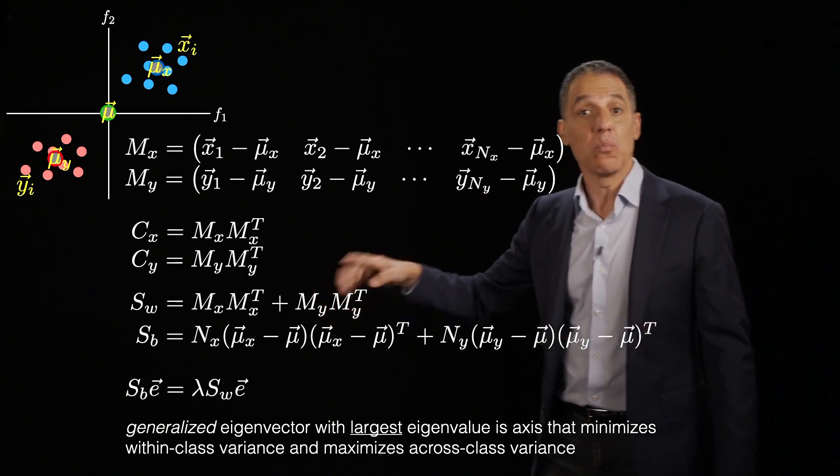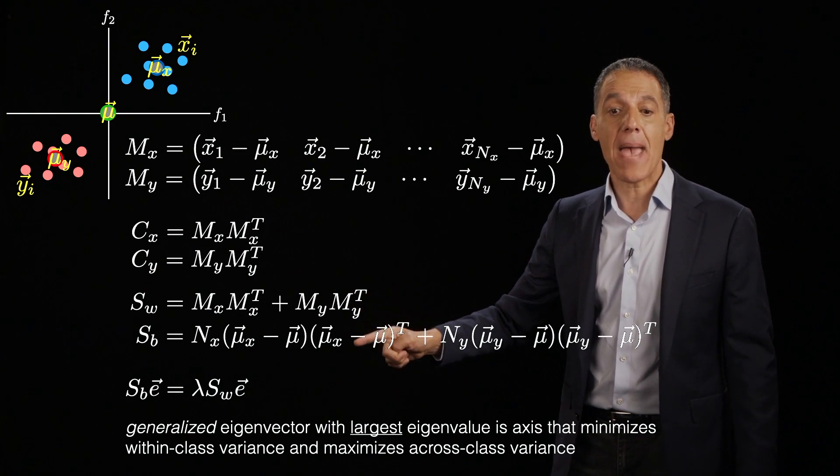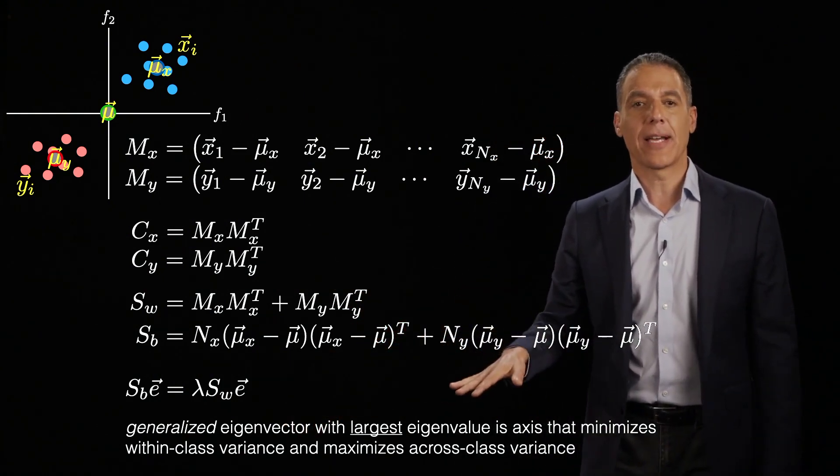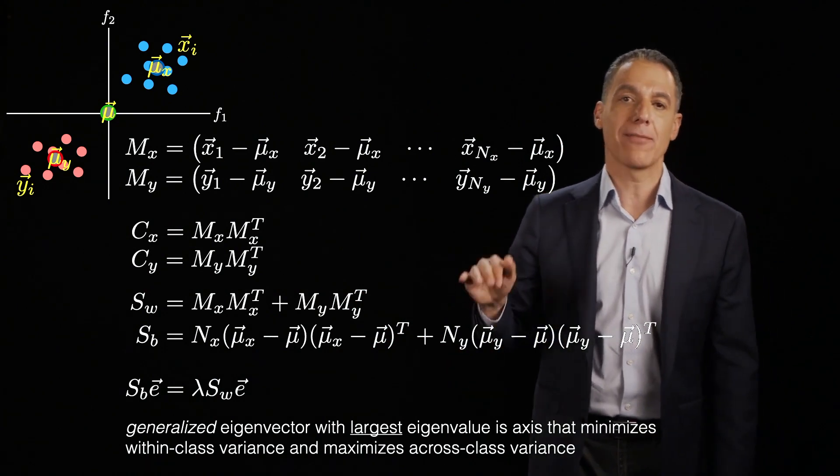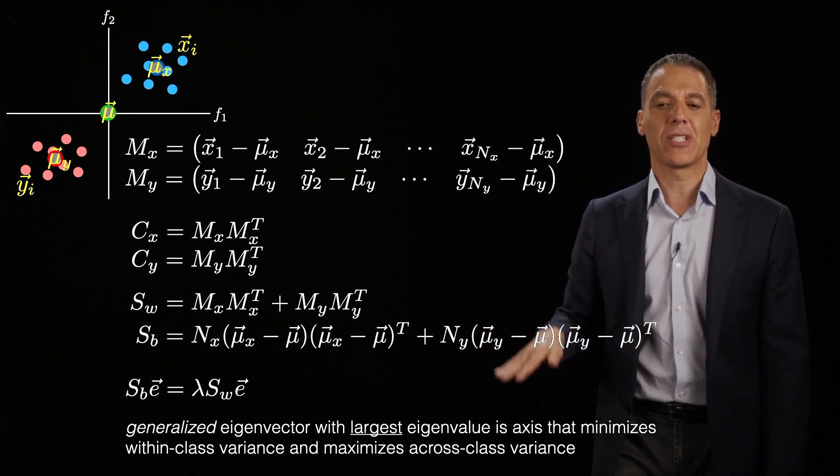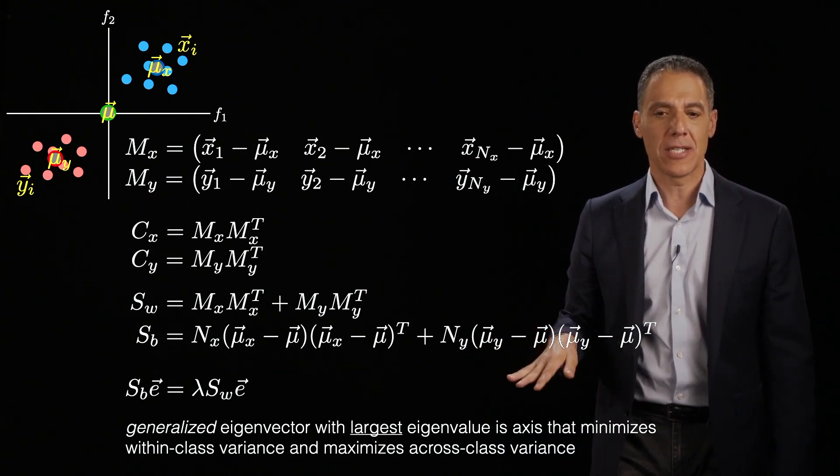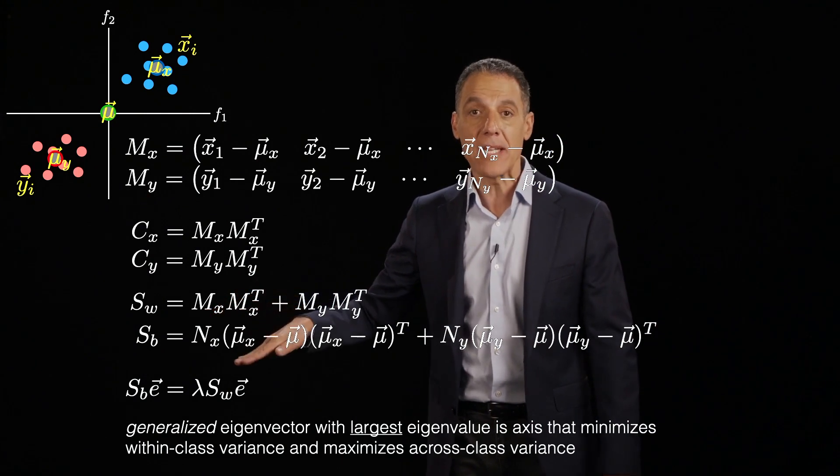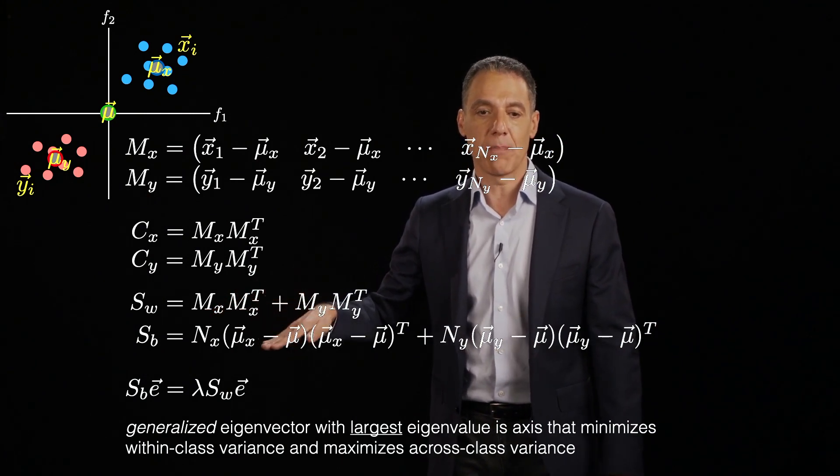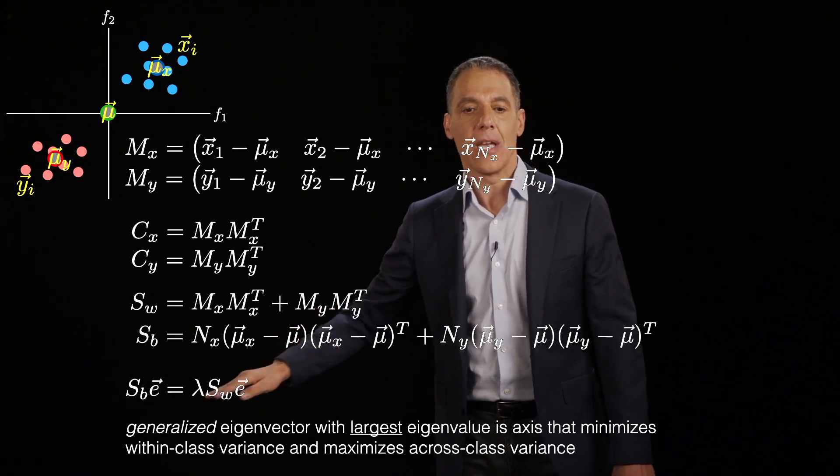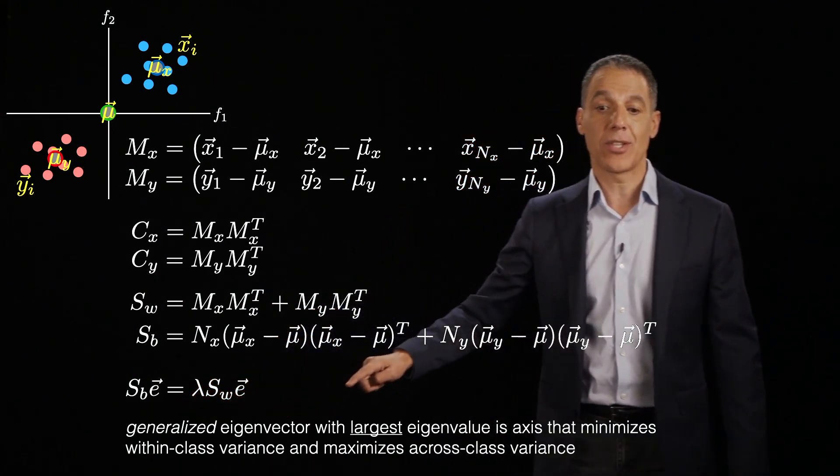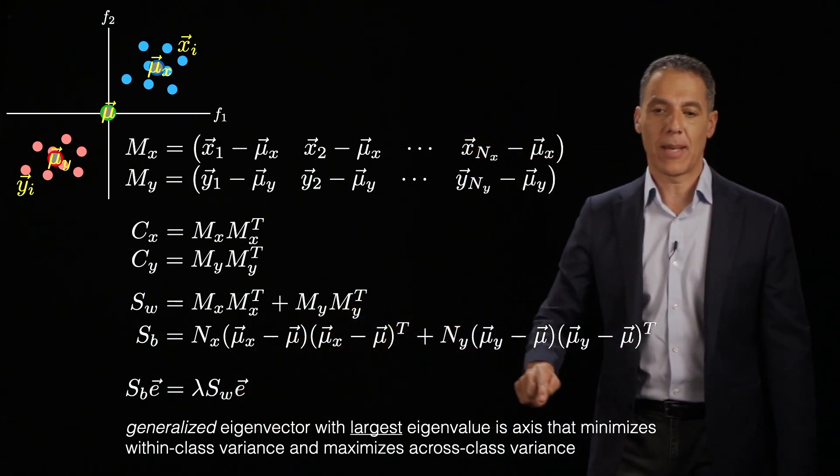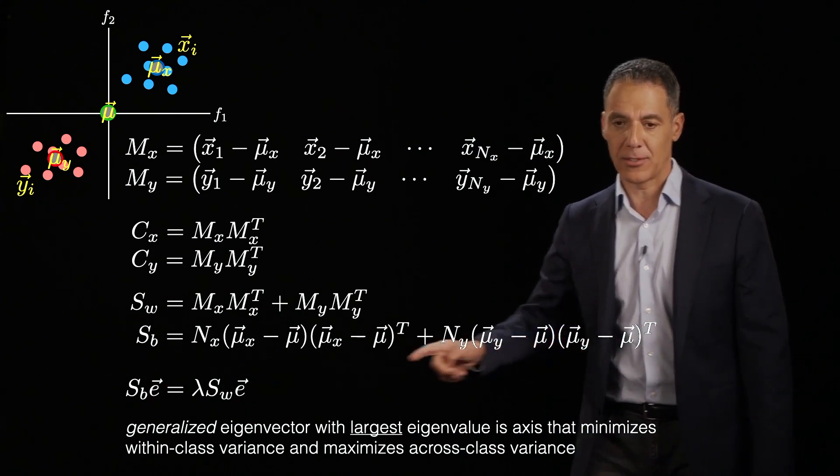And to minimize the within class variance and maximize the across class variance, we're going to set up a generalized eigenvector problem. I'm not going to derive why this solves it. I'm going to do this very operationally because the derivation is a little tedious. What I want to tell you is that if you want to maximize the within class variance and minimize, sorry, minimize the within class variance and maximize the between class variance, then we're going to compute the generalized eigenvector with the largest eigenvalue that minimizes the within class variance and maximizes the between class variance.